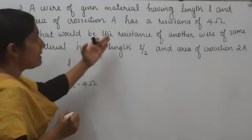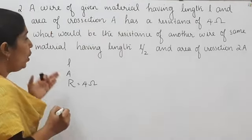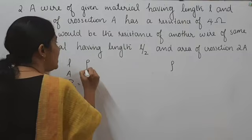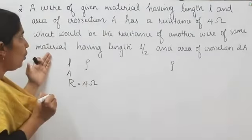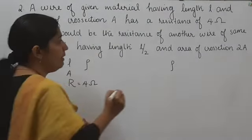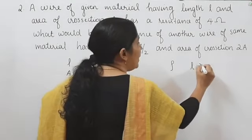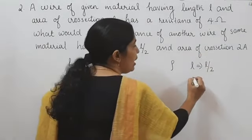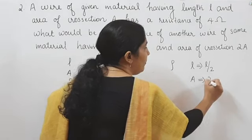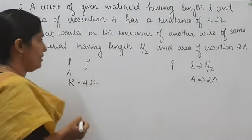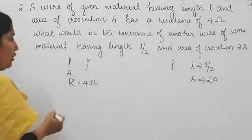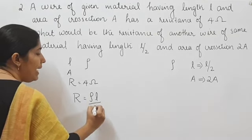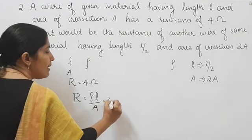What would be the resistance of another wire of the same material? Since the material is the same, the resistivity of both wires is the same. The length changes to L by 2 and the area of cross section changes to 2A. What would be the new resistance? We know R is equal to rho into L divided by A, and the original resistance is 4 ohm.